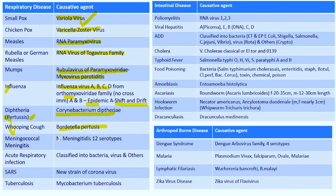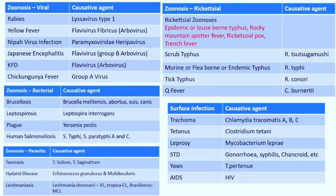Diphtheria is caused by Corynebacterium diphtheriae. Whooping cough, otherwise called pertussis, is caused by Bordetella pertussis. Meningococcal meningitis is caused by Neisseria meningitidis with 12 sub-serotypes. Acute respiratory infections are classified into various viruses, bacteria, and others — similar to how acute diarrheal disease and sexually transmitted diseases are also classified.